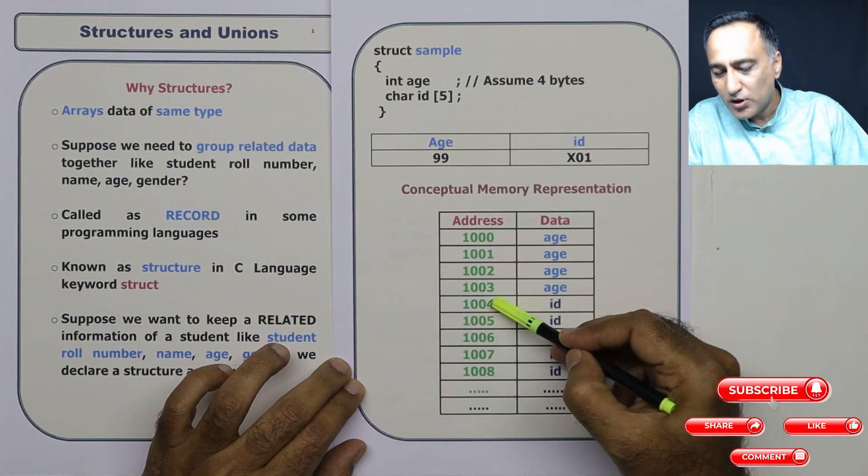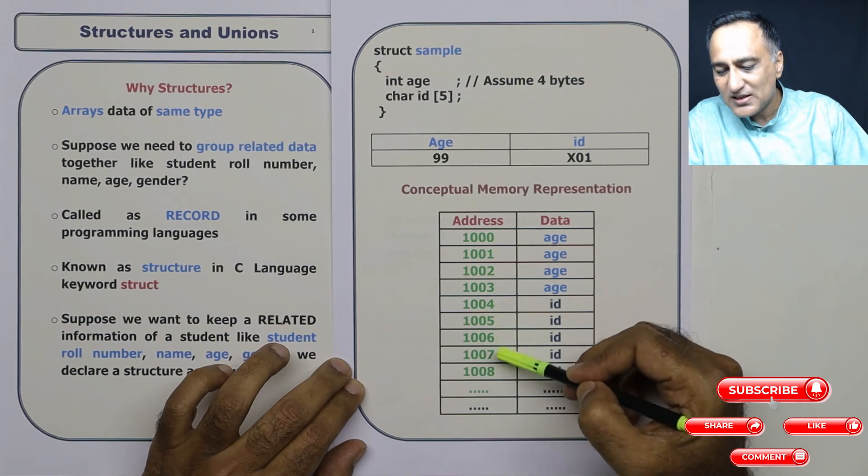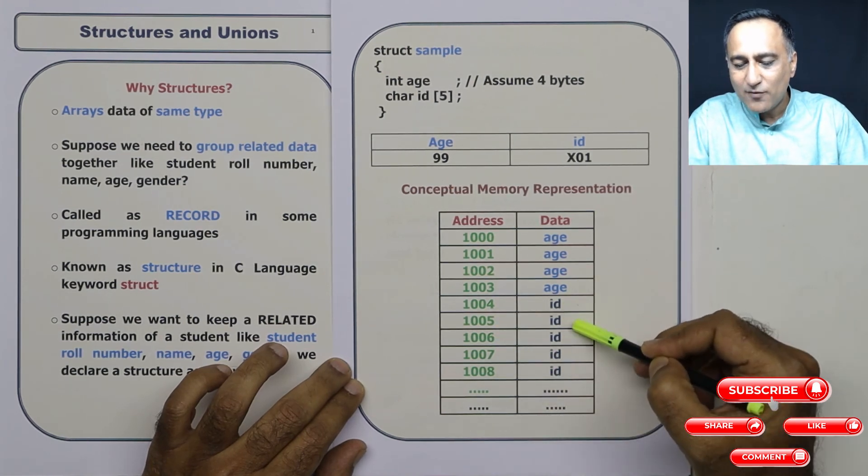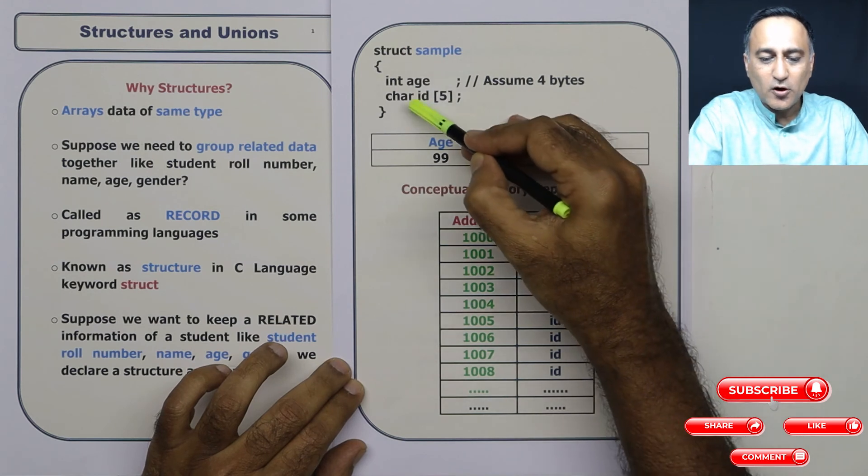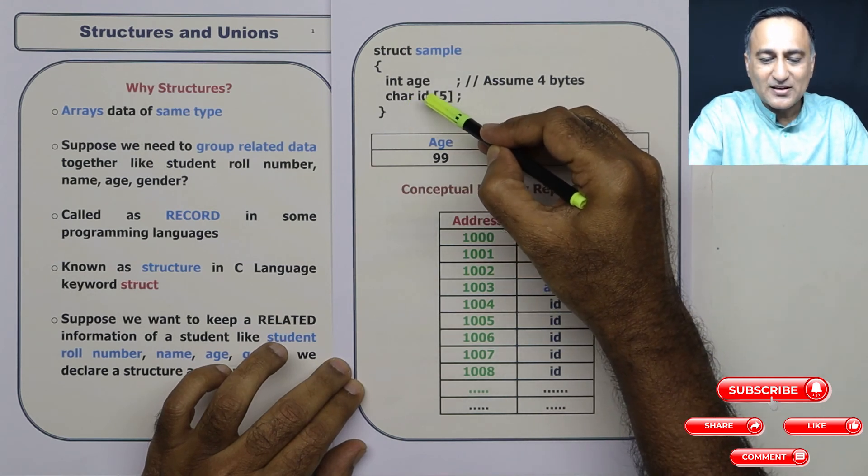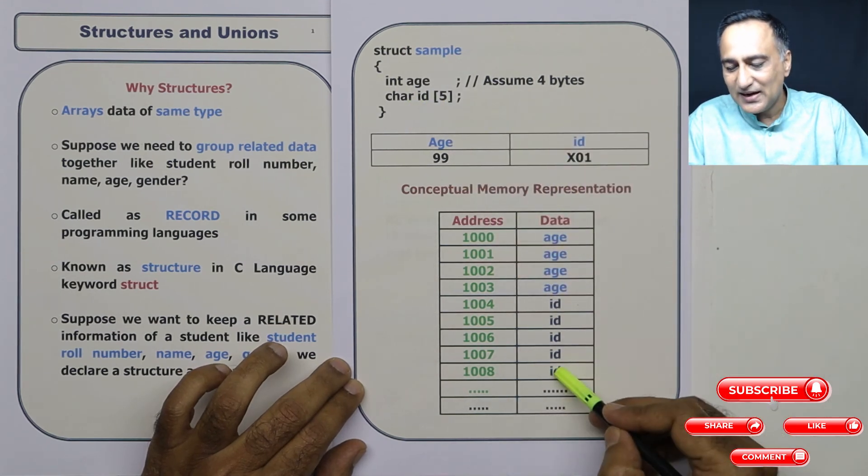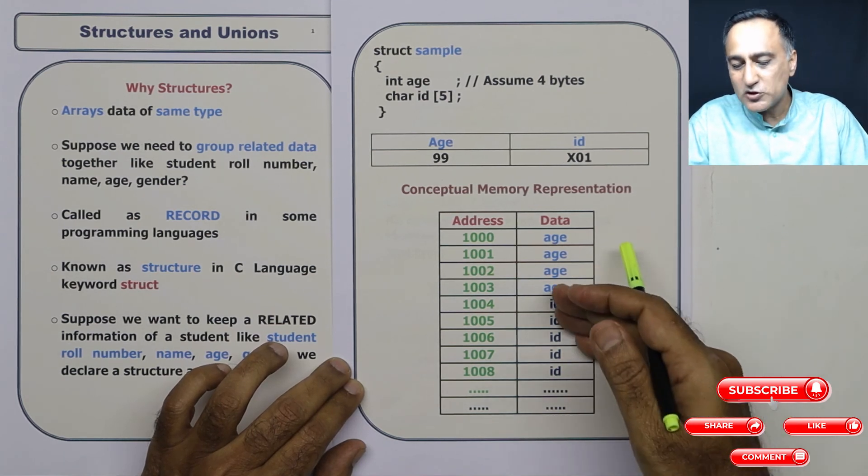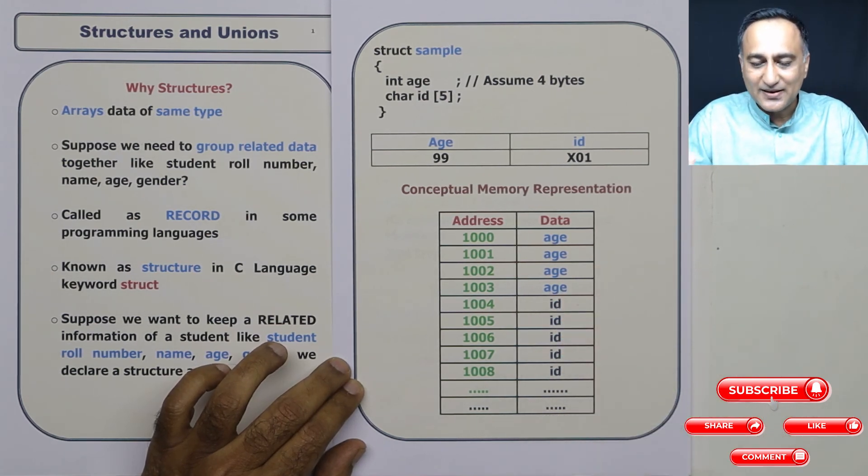Now char id is 5. So from 1004 till 1005, 6, 7 and 8, you are going to all have one character which is going to be allocated for this array of characters or strings called as ID. The last position of course you got to use it for null. So you have four spaces available to store any character.